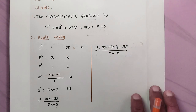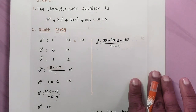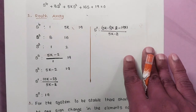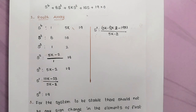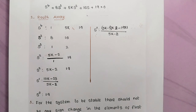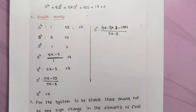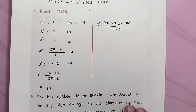Now constructing the s² row elements. The first element is (5k × 1 − 2 × 1) / 1, which equals 5k − 2. The second element is (19 × 1 − 1 × 0) / 1, which equals 19. So the s² row elements are 5k − 2 and 19.